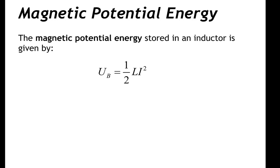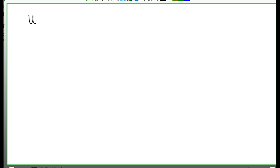The magnetic potential energy stored in an inductor is given by the expression one-half times the inductance times the square of the current through the inductor. Let's derive this expression. The expression we're going to derive is that the magnetic potential energy of an inductor is equal to one-half Li squared.